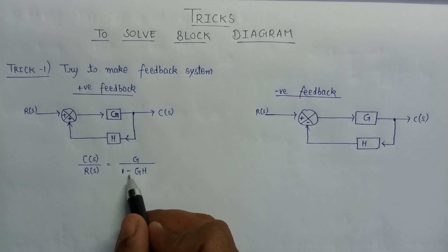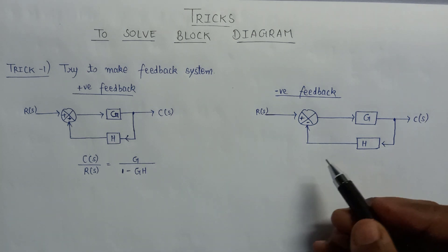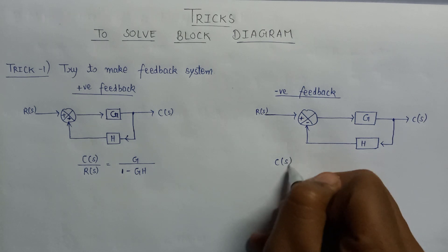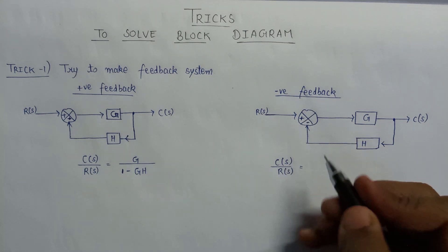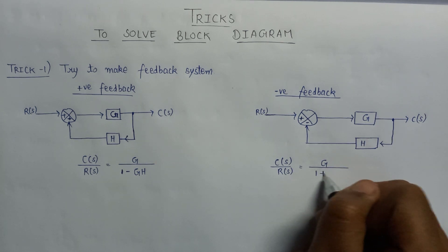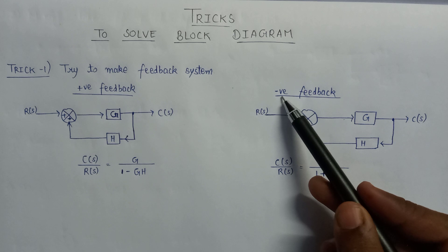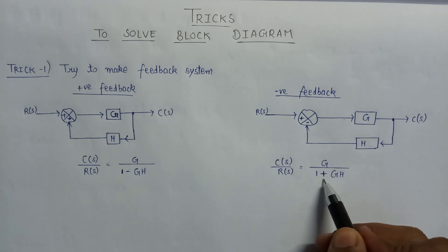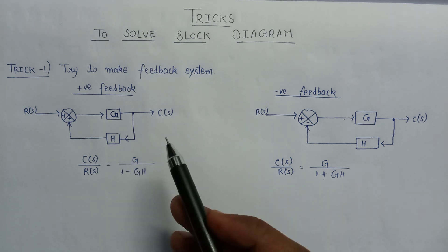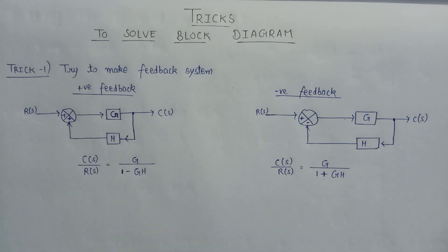Always remember that for positive feedback, the polarity in the denominator is always negative, giving G/(1 - GH). For negative feedback, the transfer function C(s)/R(s) equals G divided by 1 plus G·H — since it is negative feedback, the denominator has a plus sign. So if a block diagram is given and a feedback system is possible, we just make a feedback loop and find the transfer function easily. This is all about trick number 1.